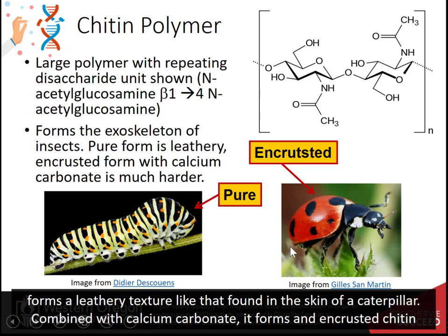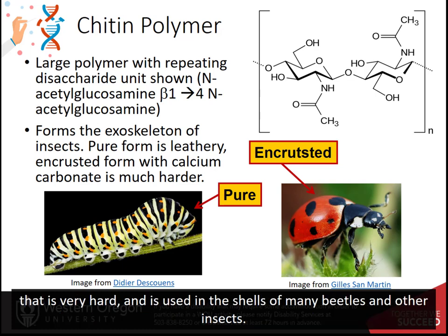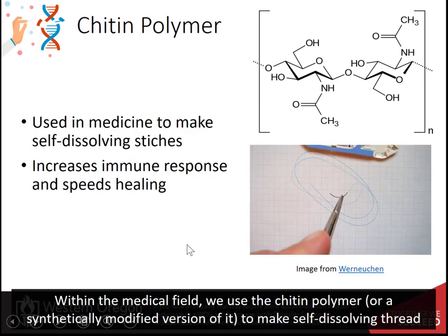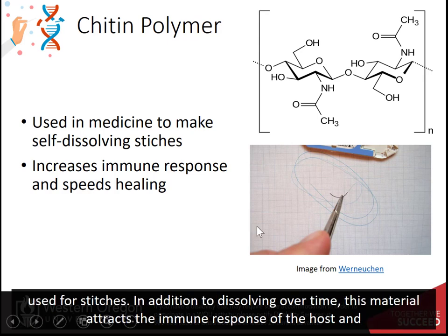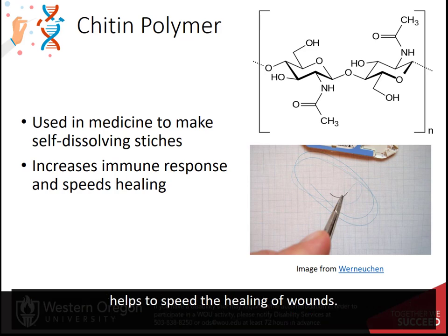Combined with calcium, it forms encrusted chitin, which is very hard and is used in the shells of many beetles and other insects. Within the medical field, we use the chitin polymer, or synthetically modified versions of it, to make self-dissolving thread used for stitches. In addition to dissolving over time, this material attracts the immune response of the host and helps to speed the healing of wounds.